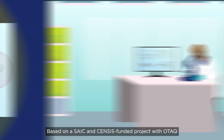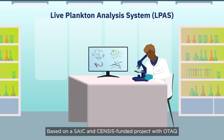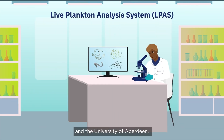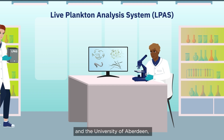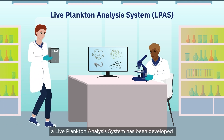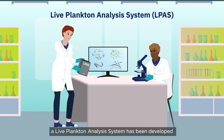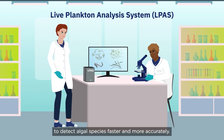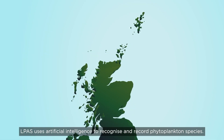Based on a SAIC and census funded project with OTAC and the University of Aberdeen, a live plankton analysis system — ELPAS — has been developed to detect algal species faster and more accurately. ELPAS uses artificial intelligence to recognize and record phytoplankton species.